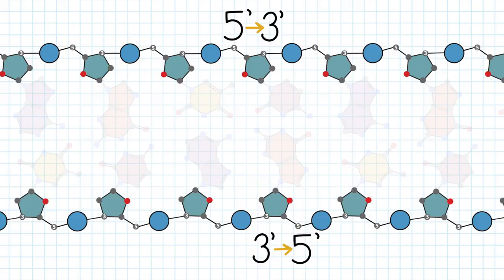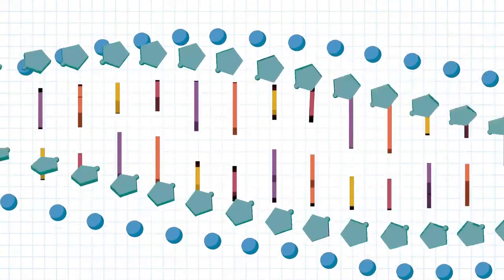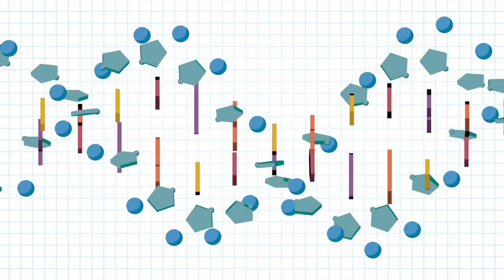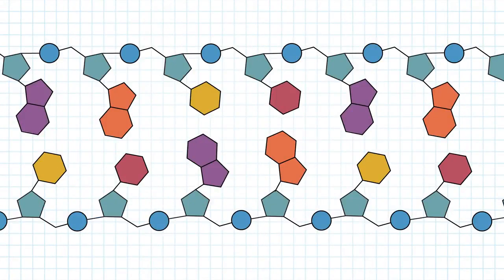These strands are also sometimes called Watson and Crick. Keep in mind that this double-stranded DNA is still a double helix, and we have simplified the representation by flattening and unwinding the helix here to better see the atomic structure.